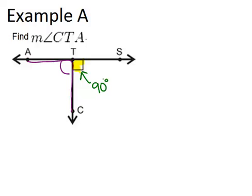It also means that these two lines, line AS, has to be perpendicular to ray TC. And I know that they have to be perpendicular because they meet at a right angle.